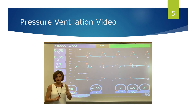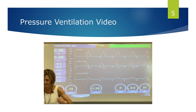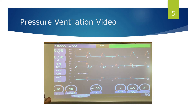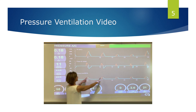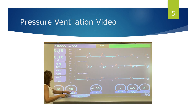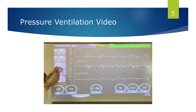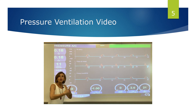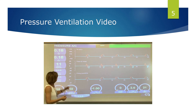Now I'm going to decrease compliance — I'm going to make the alveoli stiffer. Looking at the graphics: pressure didn't change, but look how tidal volume decreased. We still have that same 10 centimeters of water pressure set, but look at tidal volumes now — when the lung got stiffer, the machine couldn't move as much volume per unit of pressure. So when we set the pressure and the lungs get stiffer, tidal volume decreases.